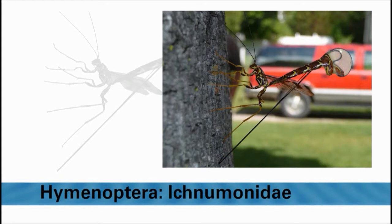Parasitoids attack a diversity of prey. Here, a female parasitoid in the family Ichneumonidae is extending her ovipositor into a tree trunk to lay eggs inside beetle larvae feeding inside. Many Ichneumonidae species are important natural enemies of vegetable caterpillar pests.